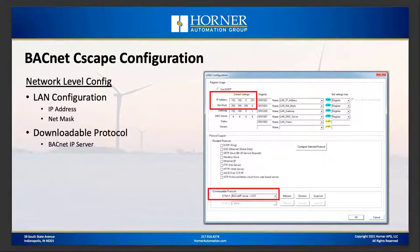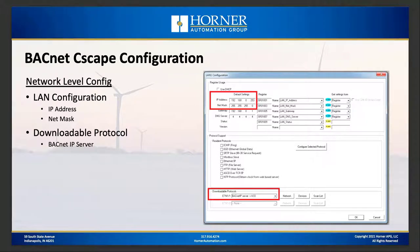For configuration in Cscape when configuring an OCS as a BACnet server, you start at the network level configuration. Go to hardware configuration, then under LAN 1 or LAN 2 for a two-LAN Horner OCS. At minimum, configure the IP address and net mask since BACnet IP is an Ethernet protocol. Then under downloadable protocols, select the BACnet IP server option. The very latest server option is version 4.05, and I'll cover what enhancements that version includes in a few minutes.